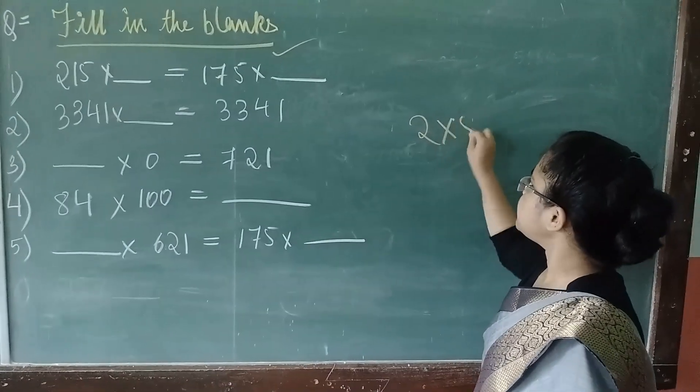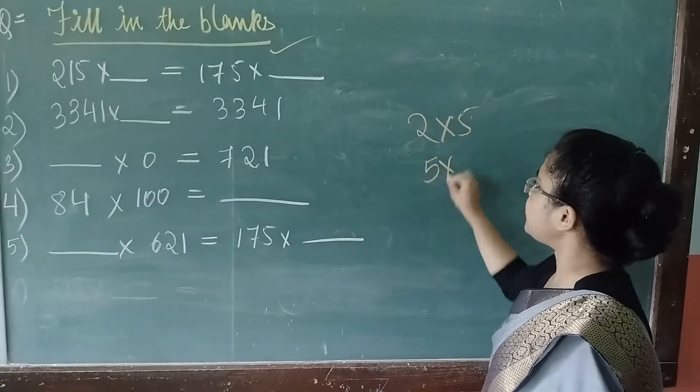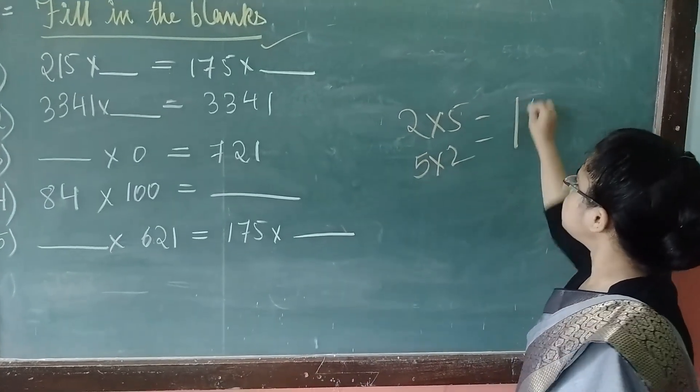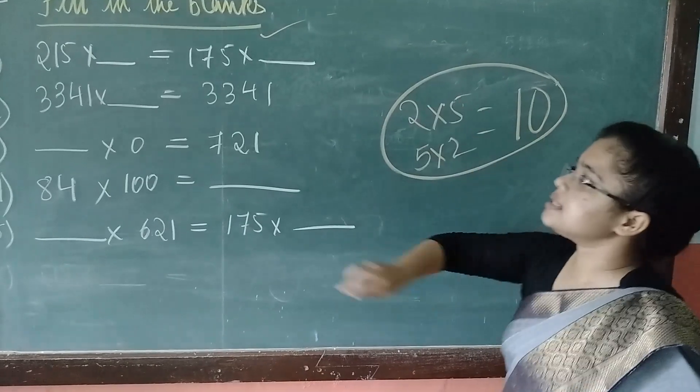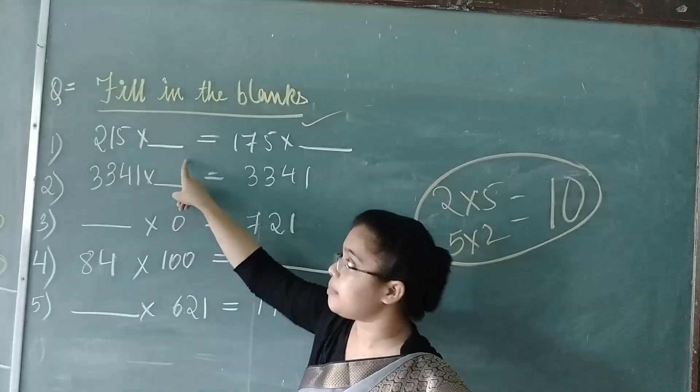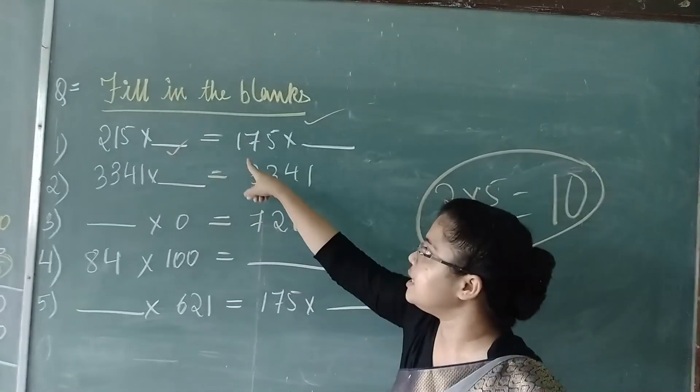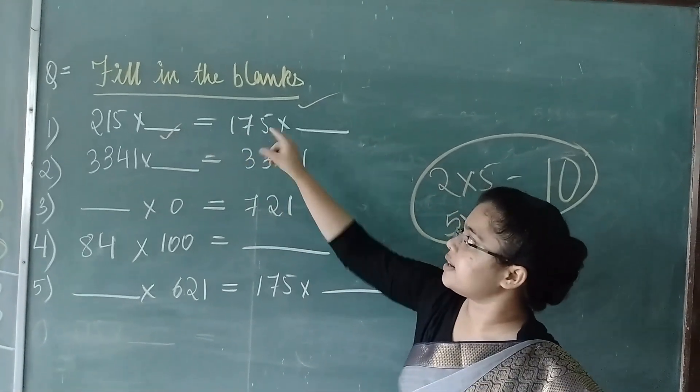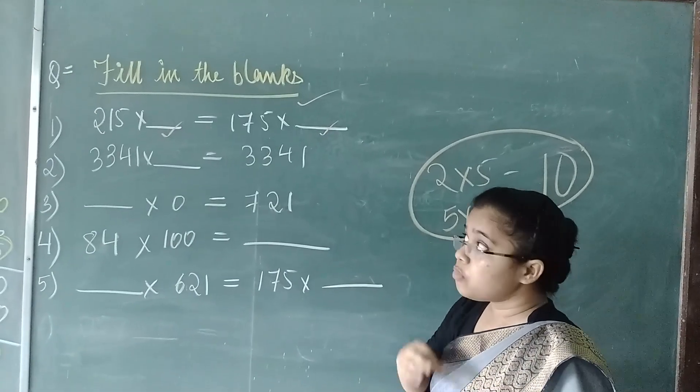Like, when we write 2 into 5 or 5 into 2, the result is 10. In the same way, when we write 215 multiplied by dash, a blank is here and here it is 175, then again one blank is there. So, what to do?